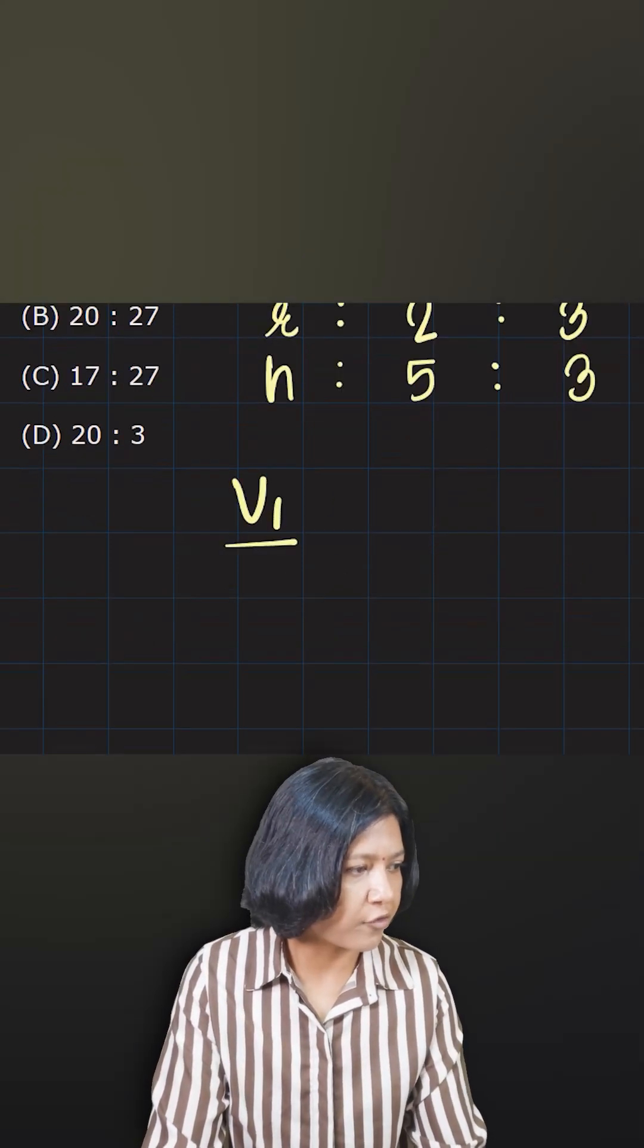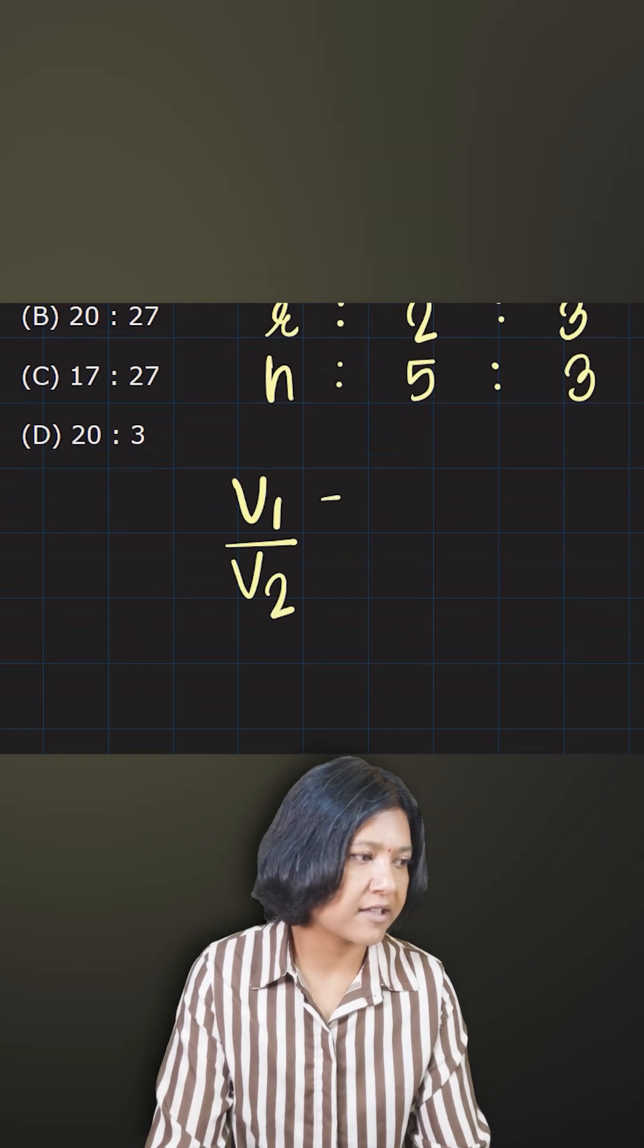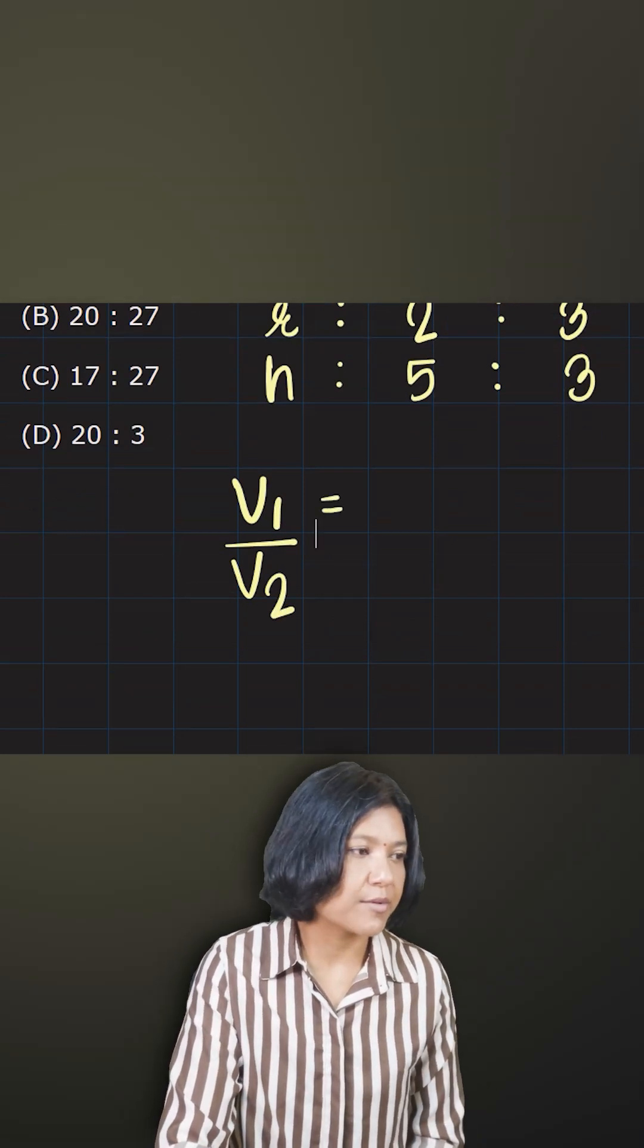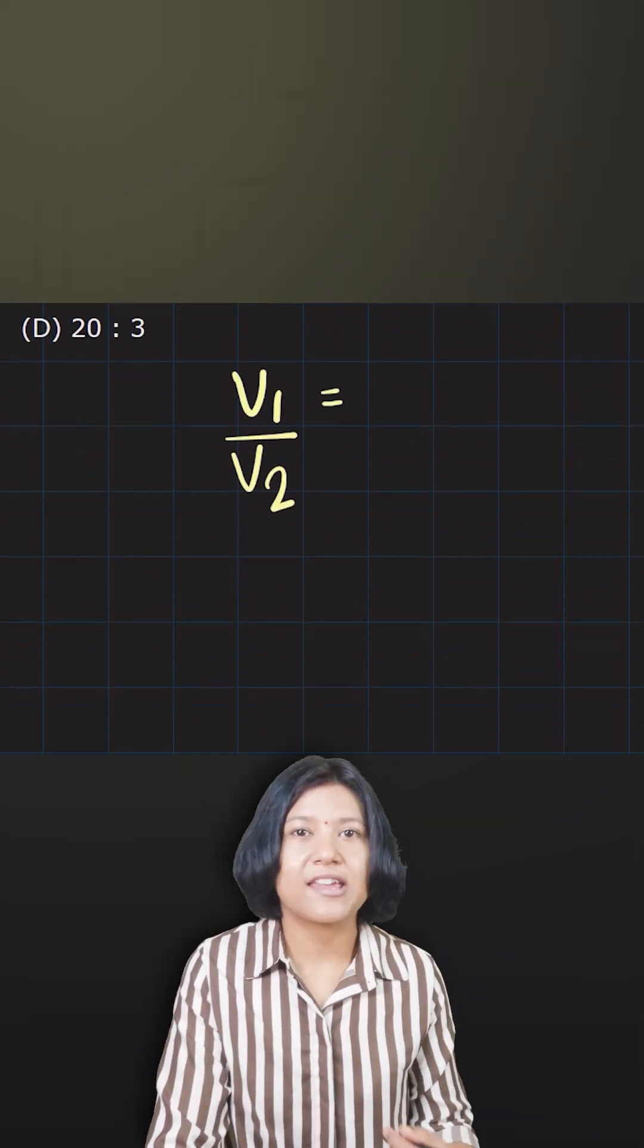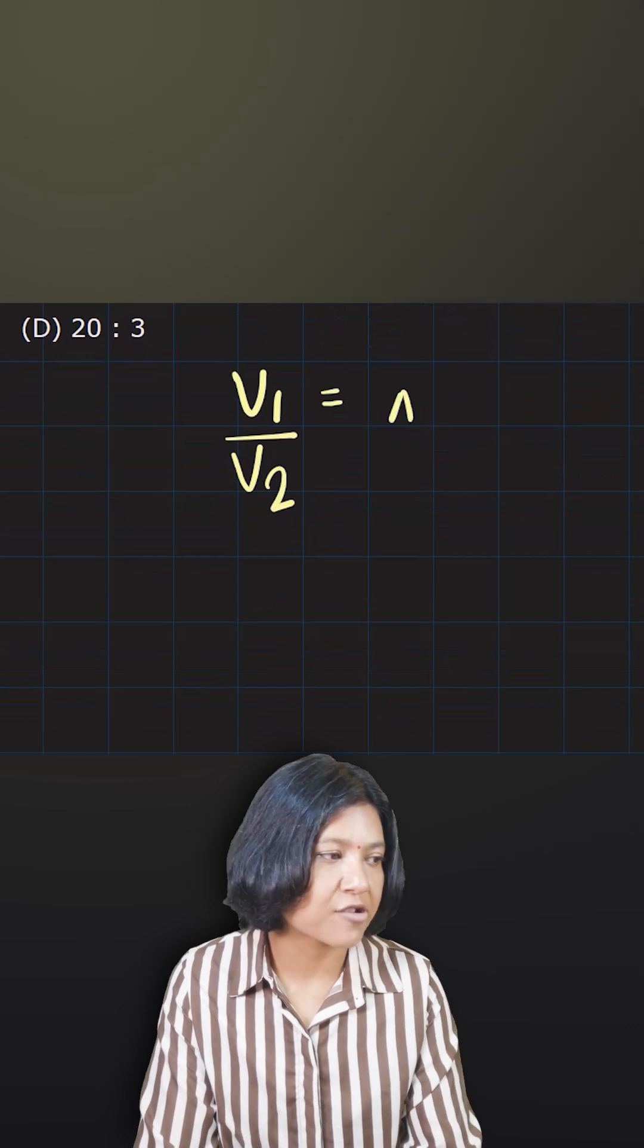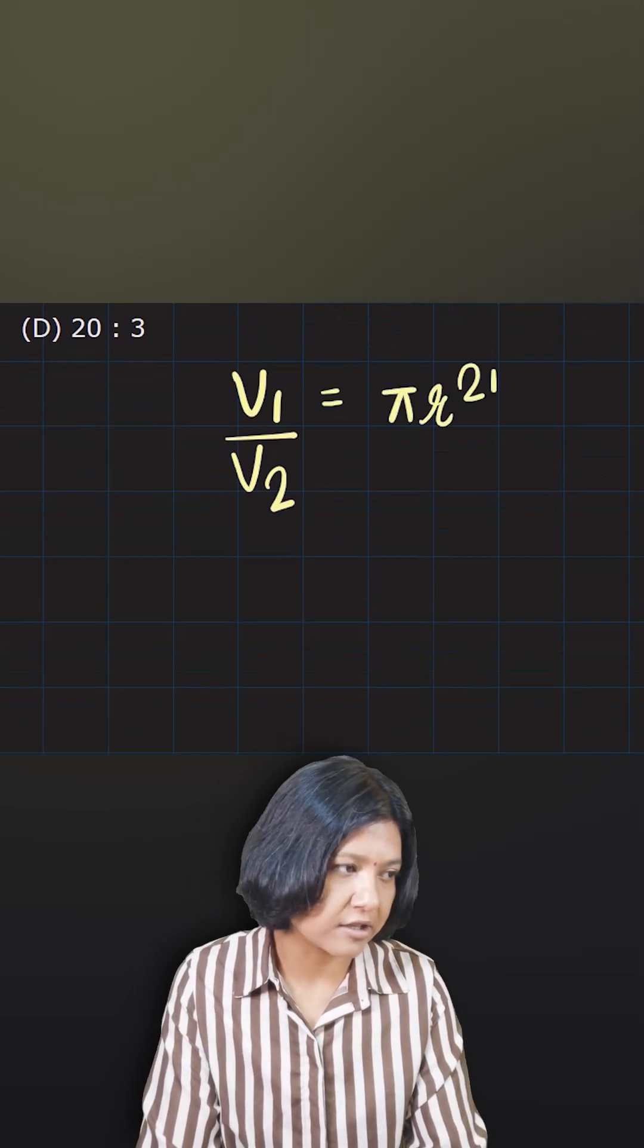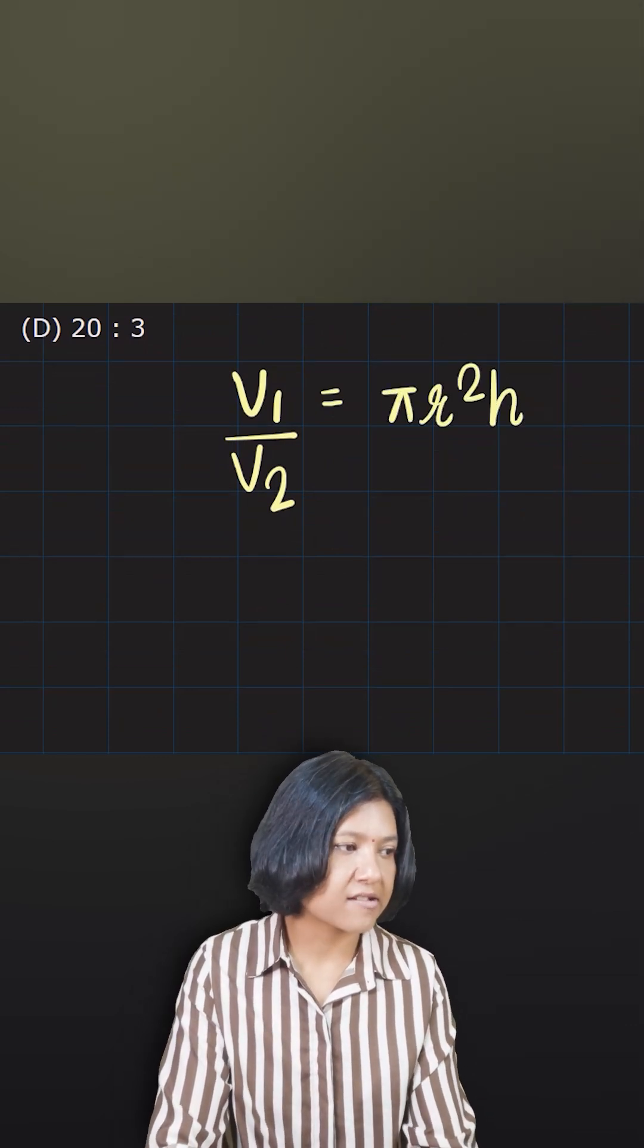Now volume 1 upon volume 2 ratio is just comparing them in terms of division. So the volume formula - volume is always area of the base which is pi r square times the height. Okay, so in the first case I'm going to write r1 and h1, in the second case I'm going to write r2 and h2.